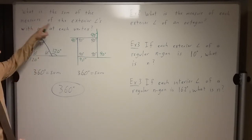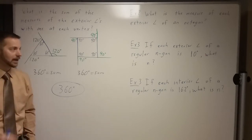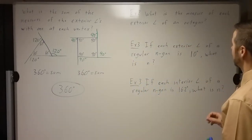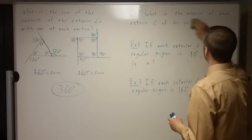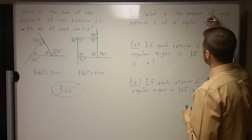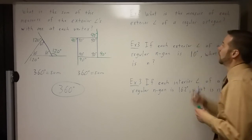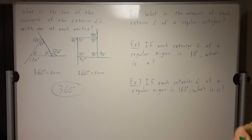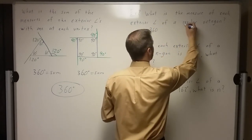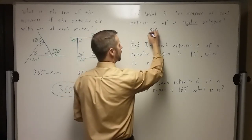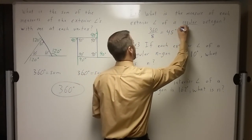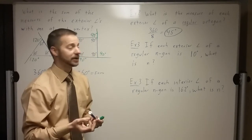The sum of the exterior angles with one at each vertex is always 360. Let's put that to use. What is the measure of each exterior angle of a regular octagon? The exterior angles add up to 360. If it's regular, all 8 angles are exactly the same. So 360 divided by 8 gives each exterior angle a measure of 45 degrees.